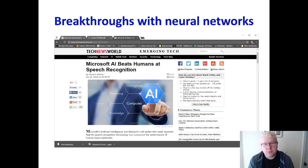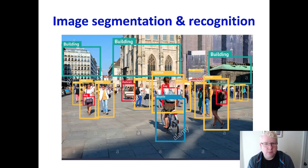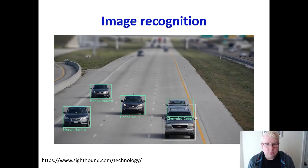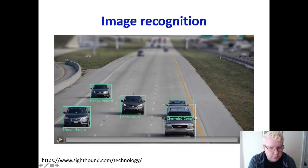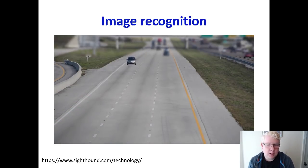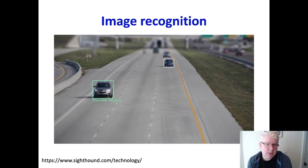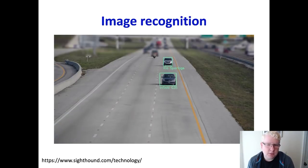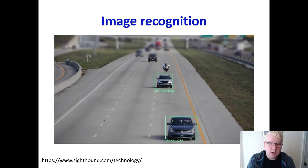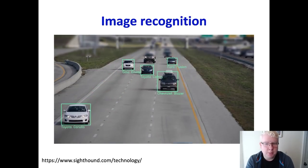We've had a lot of different breakthroughs with neural networks — in speech recognition, in translation, in image recognition. Here's an example of some vision-based networks doing their thing. You can see the network identifying cars here, and this is probably an offline simulation, but it's quite impressive how accurately and consistently this can be done with the right types of networks and the right compute power behind those networks.